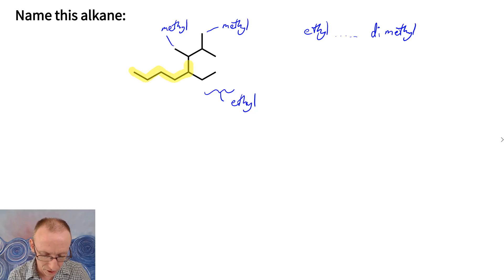So there's my longest chain again. So if we do this by trial and error we might just go left to right first. We go 1, 2, 3, 4, 5, 6, 7, 8. Now that will get us to the first substituent at the 5 position.